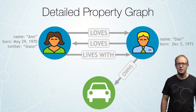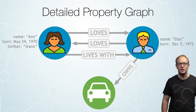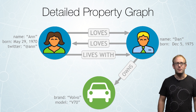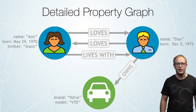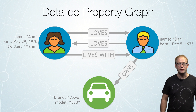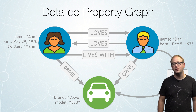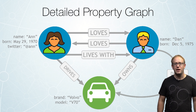We can represent some properties on this car as well, like the make and the model. Now what happens if we want some additional relationships? We just easily add them. In this case, we add the relationship that Ann drives this car and Dan also drives this car.